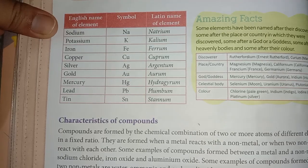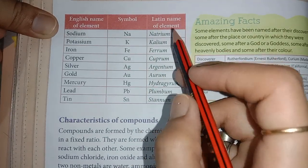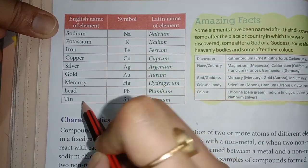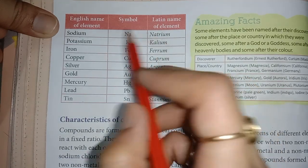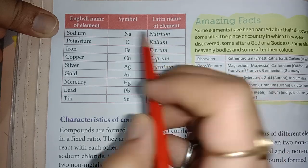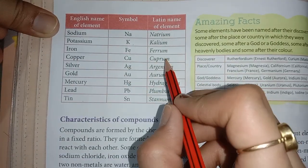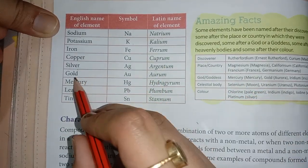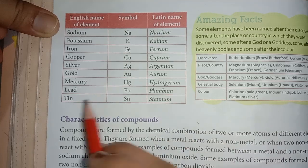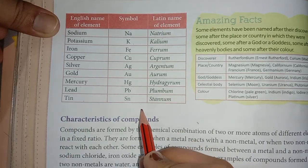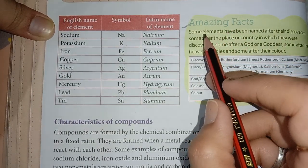Some elements have symbols derived from their Latin names. For example: Sodium – Na (Latin: Natrium), Potassium – K (Latin: Kalium), Iron – Fe (Latin: Ferrum), Copper – Cu (Latin: Cuprum), Silver – Ag (Latin: Argentum), Gold – Au (Latin: Aurum), Mercury – Hg, Lead – Pb (Latin: Plumbum), Tin – Sn (Latin: Stannum).